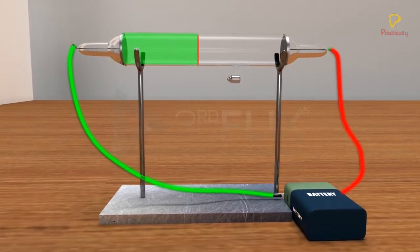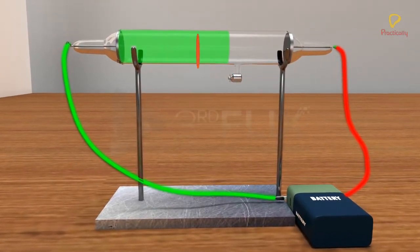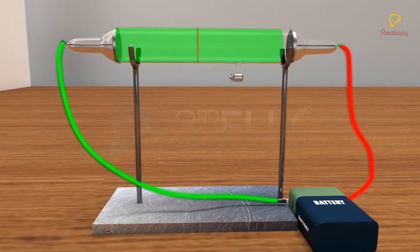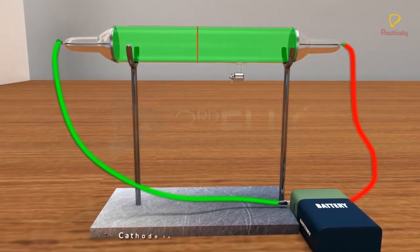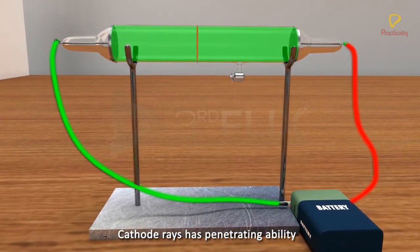When cathode rays were allowed to pass through a metal foil, a glow was seen behind the metal. This indicated that cathode rays had the power to penetrate.